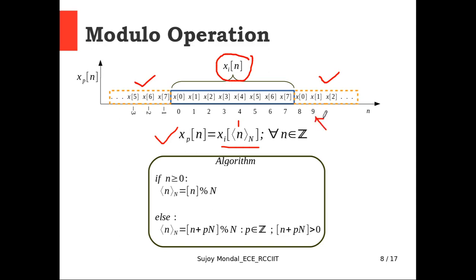If we consider any number small n equals 9, so if we put this number here, that definitely satisfies the if condition that n is a non-negative number. So what is the value of angular bracket 9 sub 8 equals to 9 modulo 8. That should be equals to 1. That means x_p at 9 can be represented as x of i at 1. That's why this is x1. This x1 is coming from this x_i frame data. So this will automatically repeat.